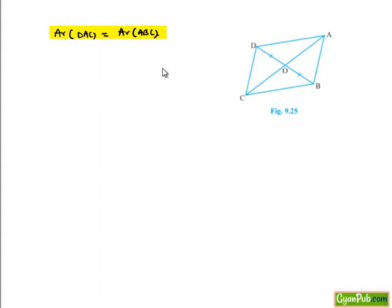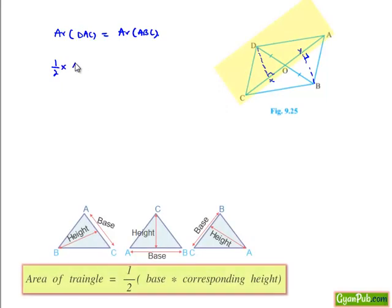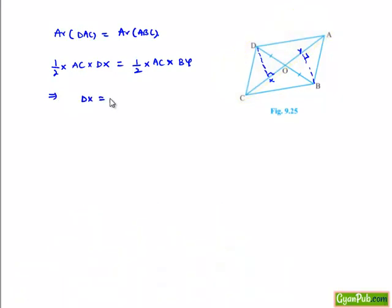Now we shall draw DX perpendicular to AC and BY perpendicular to AC. Therefore, area of triangle DOC equals half times base AC times height DX, which equals half times base AC times height BY in triangle ABC. This implies DX is equal to BY.